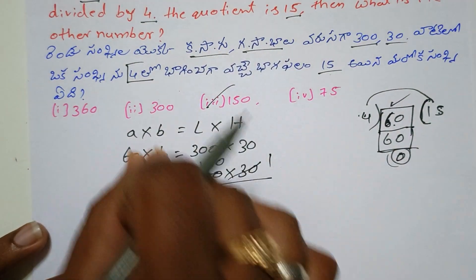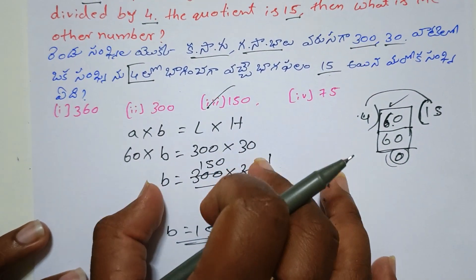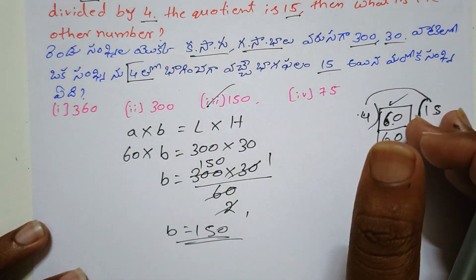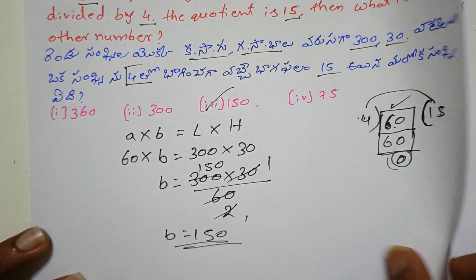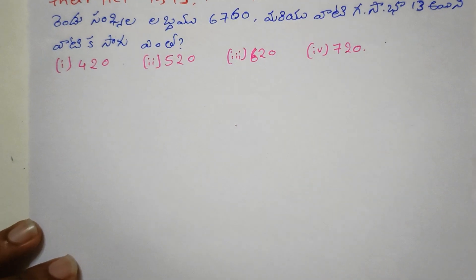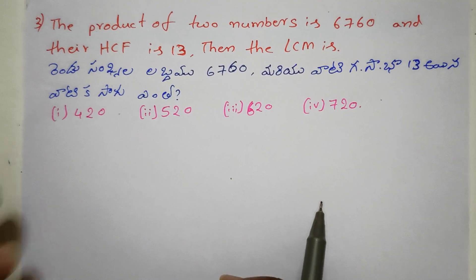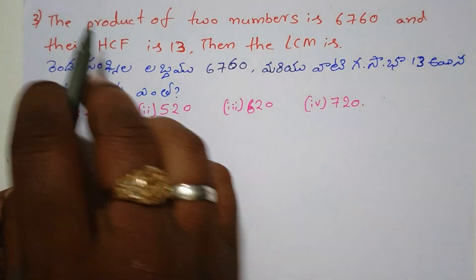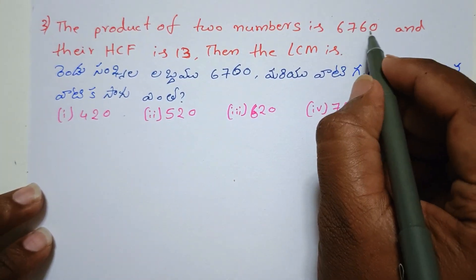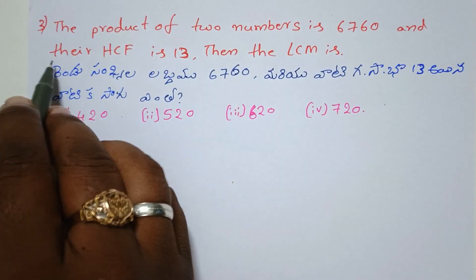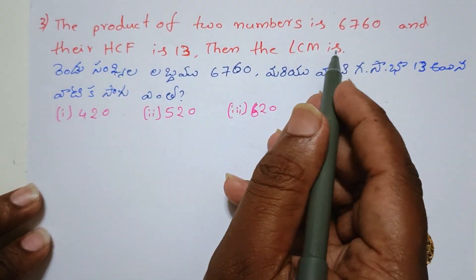The process is clear; you will solve the problem automatically. Now we will discuss a few more questions — a little different. The product of two numbers is 6760 and the HCF is 13. Then find the LCM.